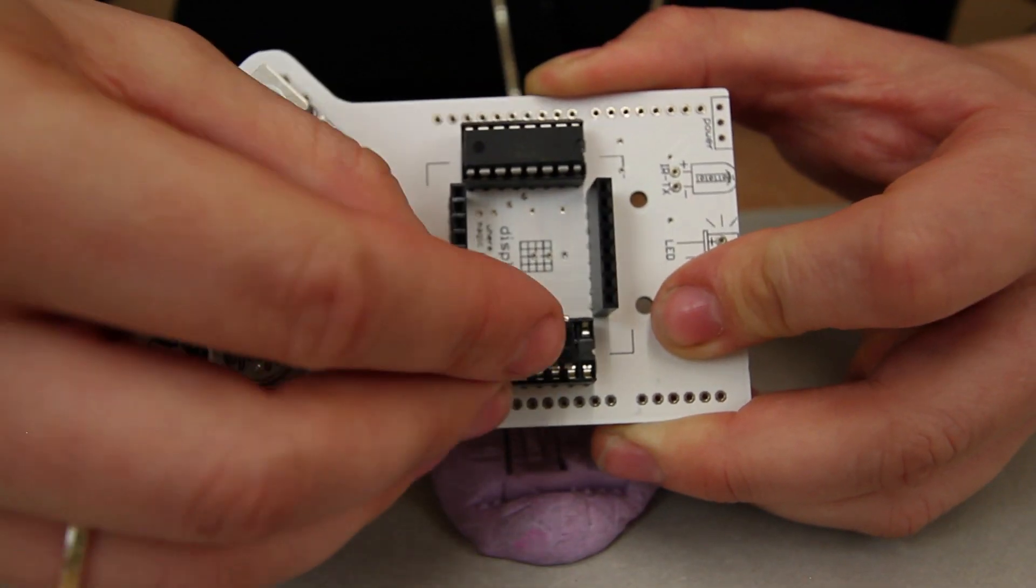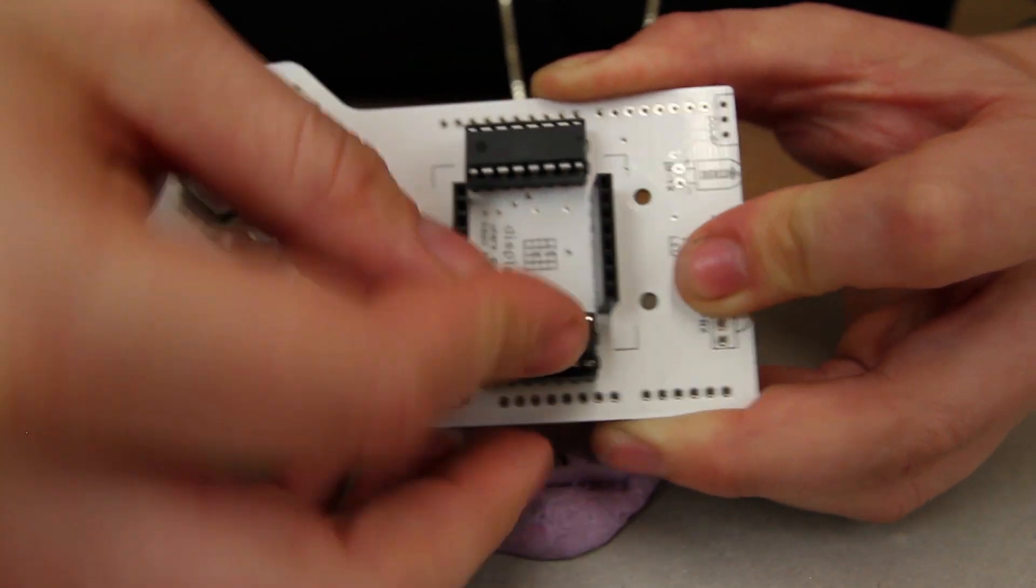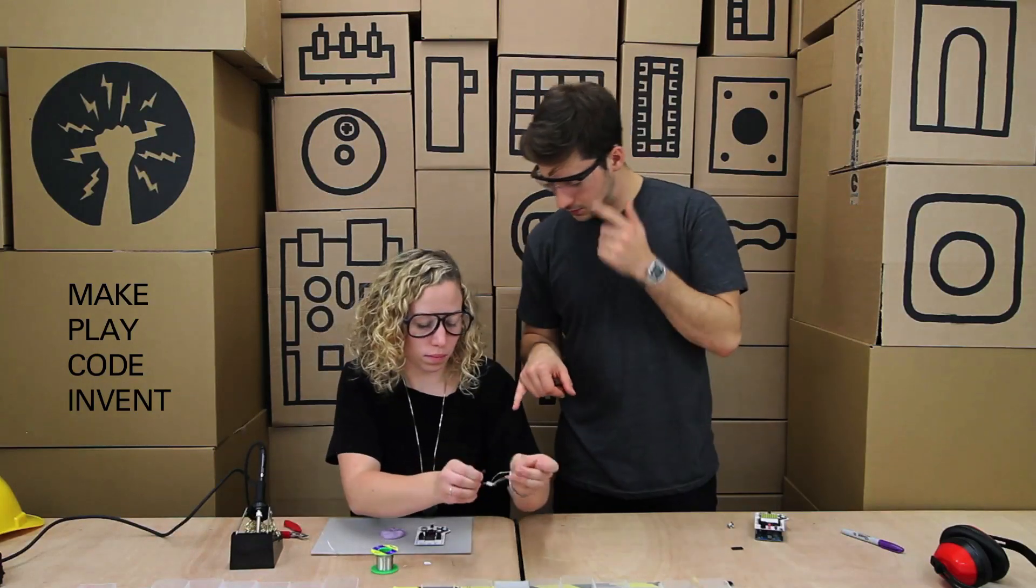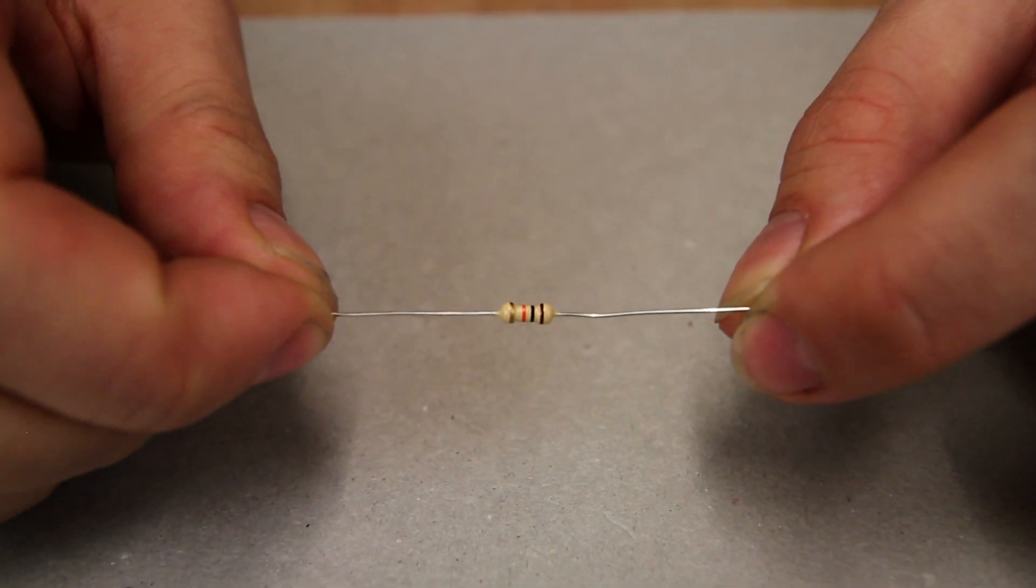Whilst we're doing that, why don't we do the resistors. Two resistors, one is a 10K resistor, and one is a 1K resistor.